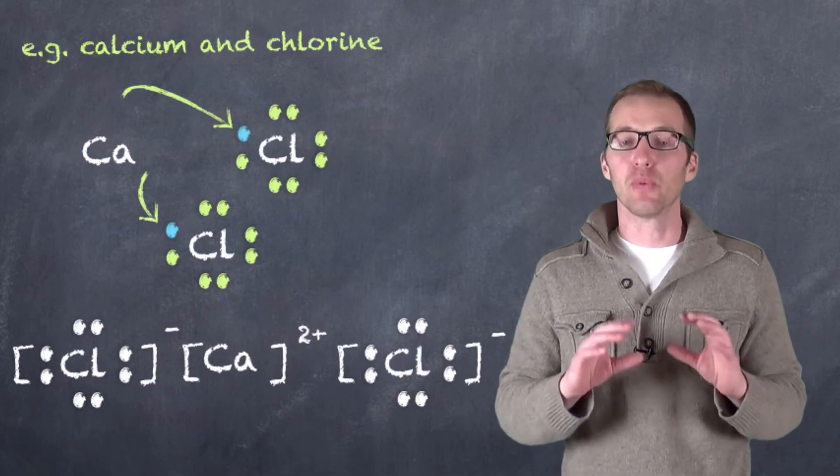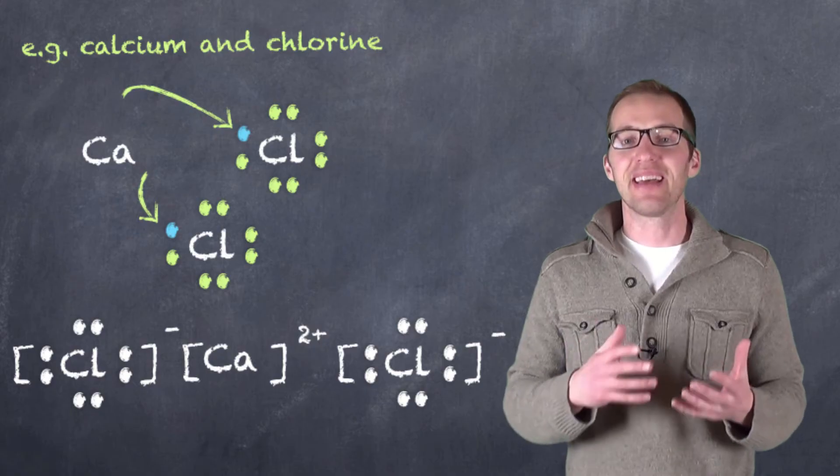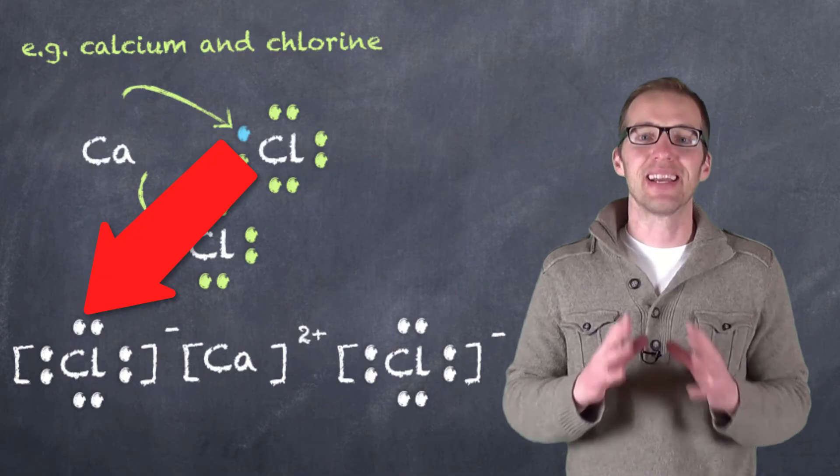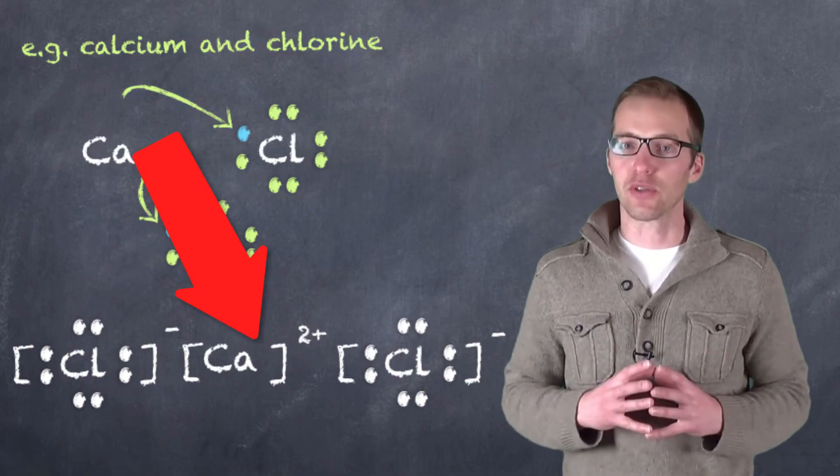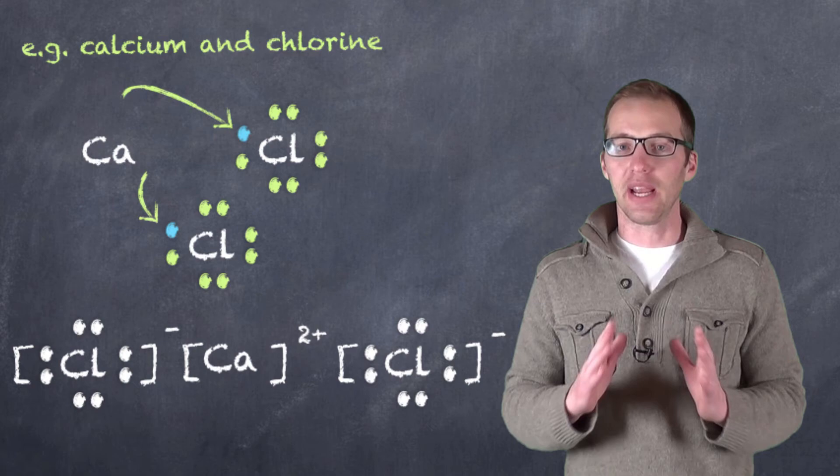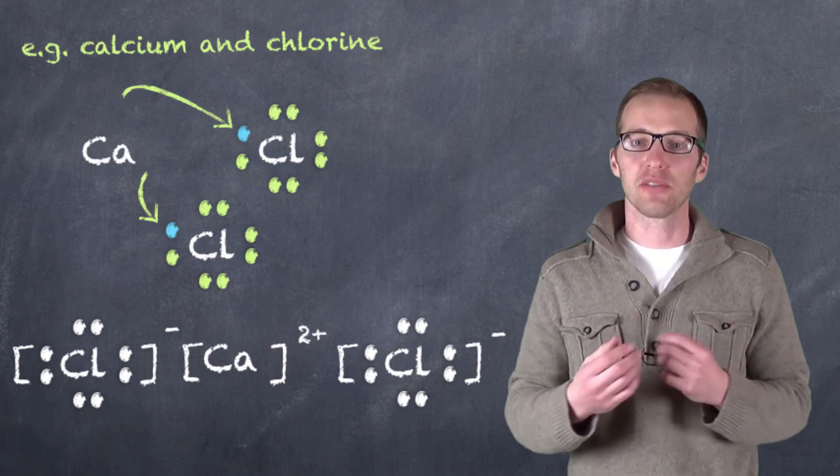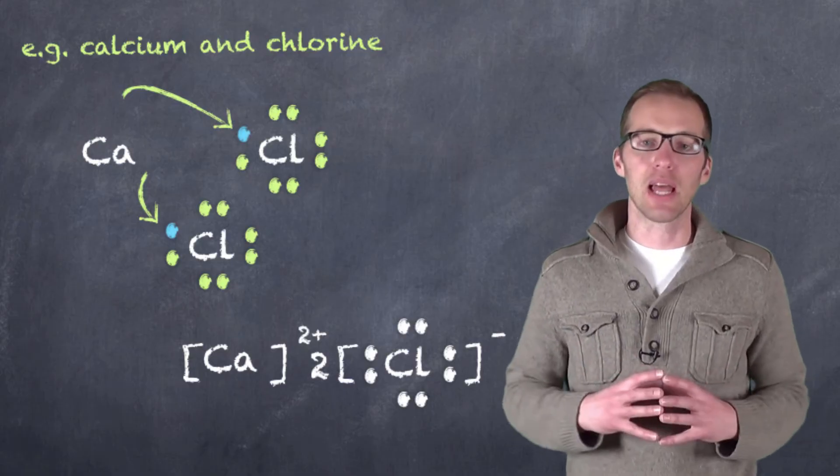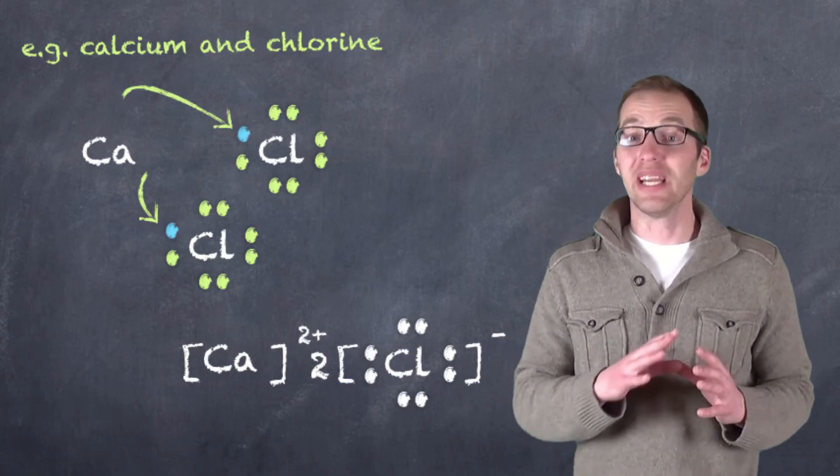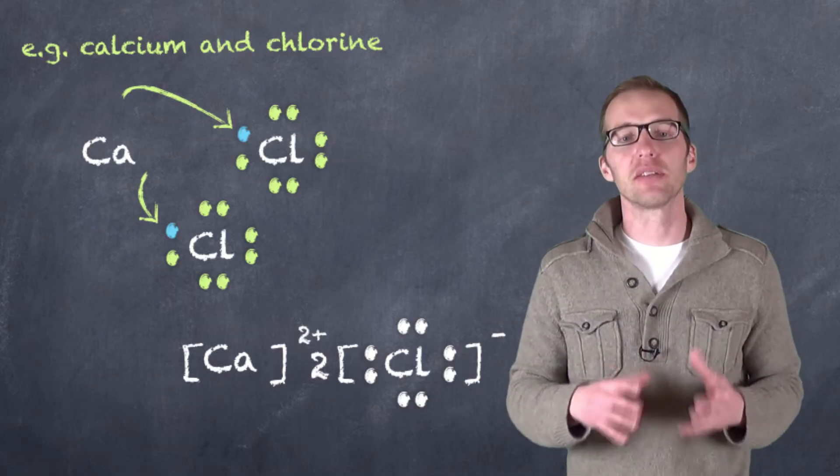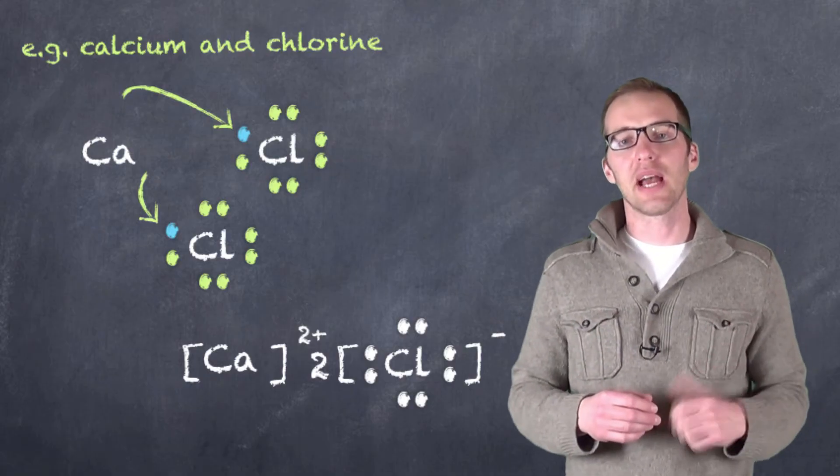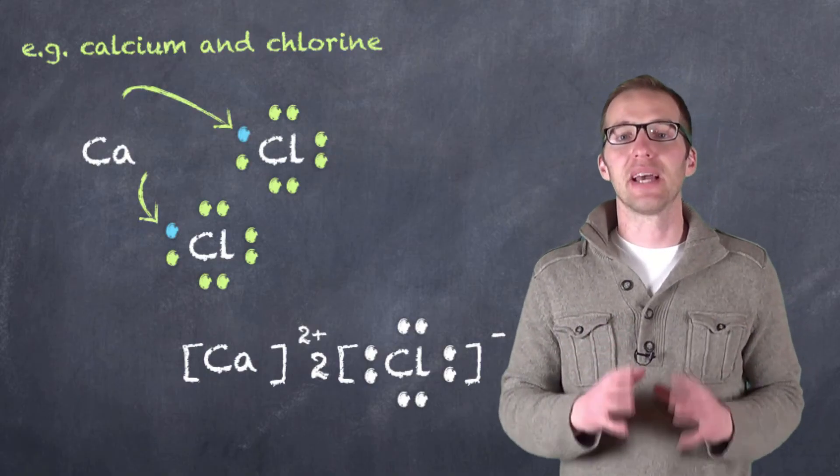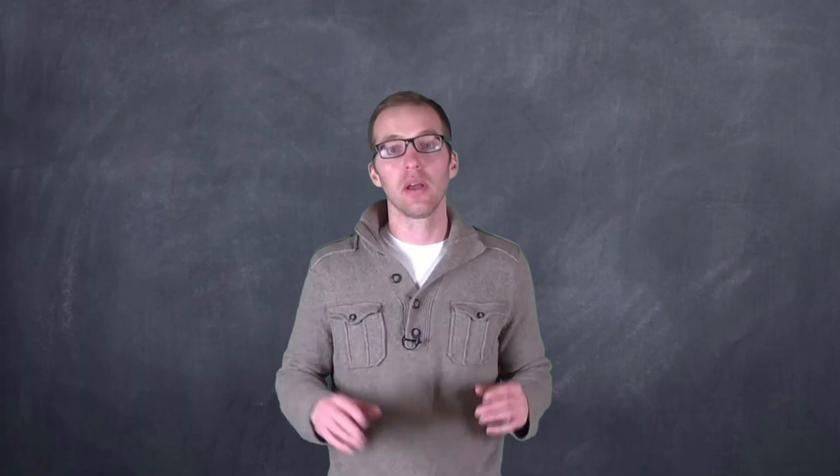Now, again, by convention, the way that we draw these and the way that it's accepted is that the anion, the negatively charged ion, is going to have a full complement of electrons around it. The cation has no electrons around it. And I've drawn it in alternating because we have a negative charge, positive charge, negative charge. But if you want to condense it a little bit, and this is something I allow my students to do, I will allow them to put a two in front, not as a subscript, but in front of the chlorine to indicate that there's one calcium ion and two chloride ions here in bonding. And that's how we go through and represent ionic compounds using Lewis structures.